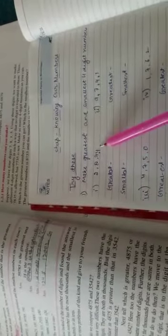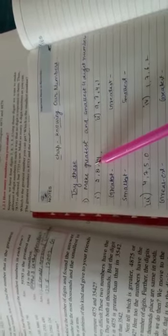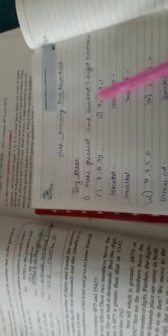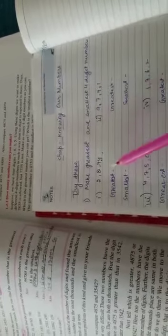The first question of exercise is, what we have to do is, we have to make greatest and smallest four digit numbers by using these digits.